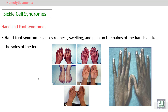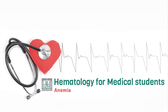Hand and foot syndrome: due to obstruction of the blood vessels supplying the hands or feet, it leads to ischemia and infarction — inflammation, redness, swelling, and pain. There may be gangrene that requires amputation.